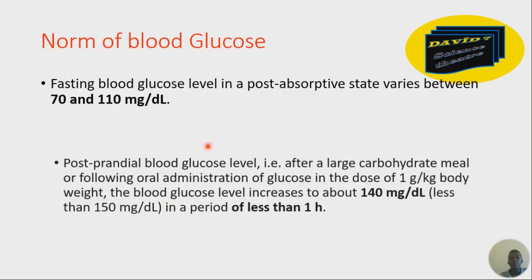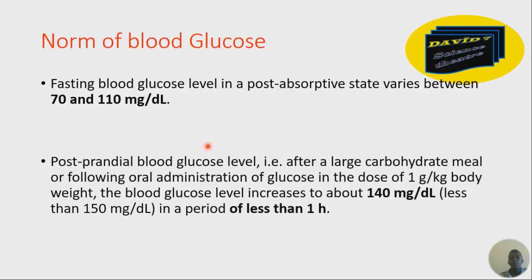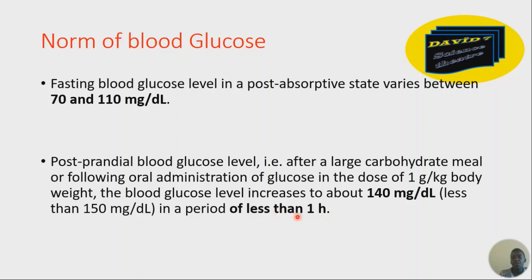That is a point to note. Postprandial blood glucose level — when you've just had a large carbohydrate meal or administration of glucose at a dose of one gram per kilogram of body weight — the blood glucose level increases to about 140 milligrams per deciliter, and should be less than 150 milligrams per deciliter within a period of less than one hour.